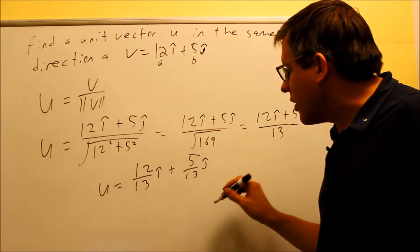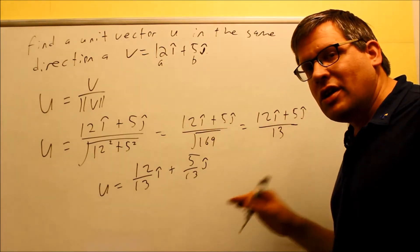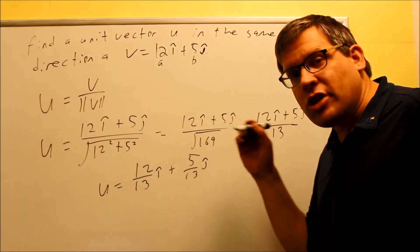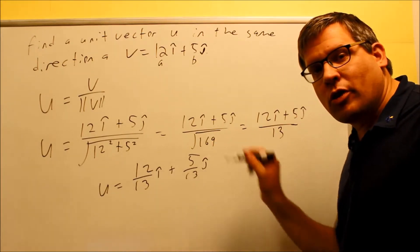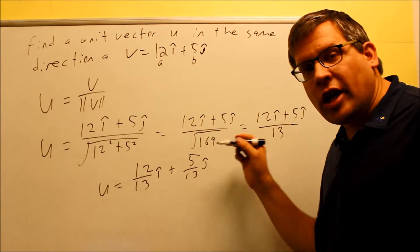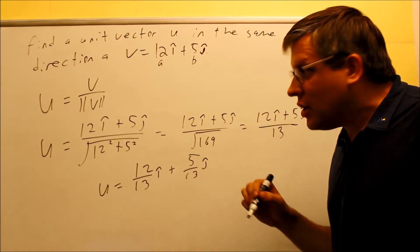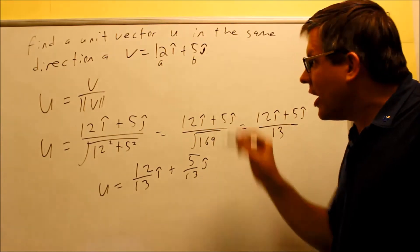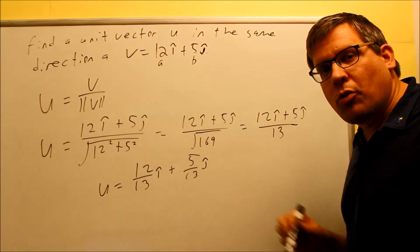And so this would be your answer. So therefore, if I wanted to check this by finding the magnitude, by putting it in the magnitude formula, 12/13 squared and 5/13 squared, when I work that out, it would turn out that this has a length of one, but it would also be exactly going in the same direction as this vector, 12I plus 5J. Let's look at one more example of this.